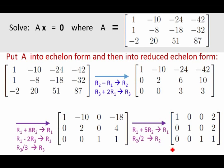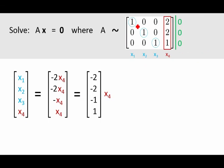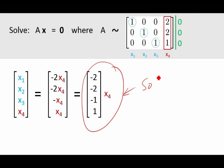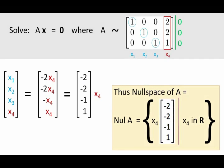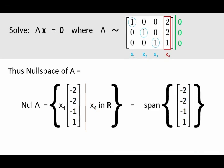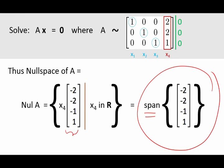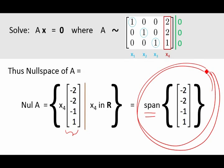Once we have it in reduced echelon form, we can easily solve this. We've done that in a previous video, so we can see that x₁ = -2x₄, and so on. We now have our solution set — this is our solution set to Ax = 0, and that means it is also our null space. Our solution set consists of all multiples of this vector right here. Since it consists of all linear combinations of this single vector, it is the span of this one vector, and so our null space is the span of this one vector. It is all multiples, and so we have a one dimensional null space. This is the null space of our matrix A.